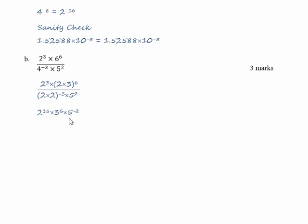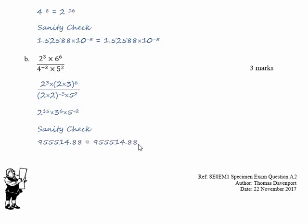Again we need a sanity check: we evaluate the original expression and then evaluate the simplified expression separately. If we do that we get the value of nine hundred and fifty five thousand five hundred from both. So we can be reasonably confident that our answer is correct.